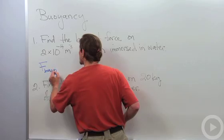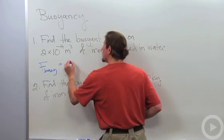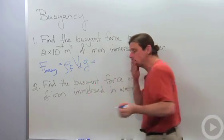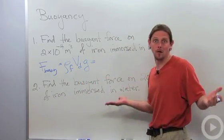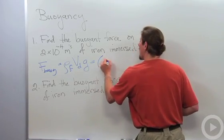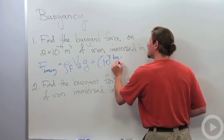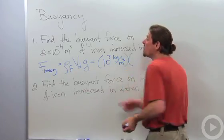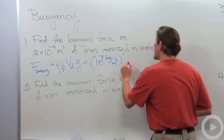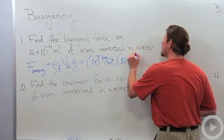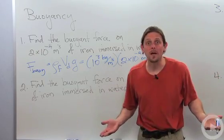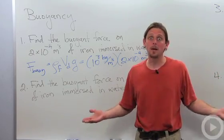F buoyant equals density of the fluid, volume displaced times the acceleration due to gravity. The density of water is a thousand kilograms per cubic meter. The volume displaced is 2 times 10 to the minus 4 cubic meters, and I know that immediately just from the unit. The teacher can't avoid giving you a unit because otherwise it'd be wrong. So we can always use that key to tell us what this piece of information is.